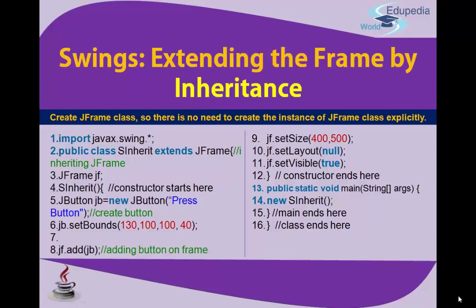Moving on to line 13 — the main method is written: public static void main(String[] args). The curly bracket opens. Line 14 says new AsInherited() — AsInherited is already referenced, and with the keyword new and the constructor call, it acts like a function and is terminated with a semicolon. The constructor will work and start displaying the objects you placed inside it.